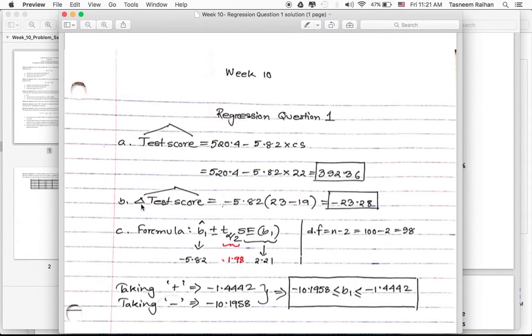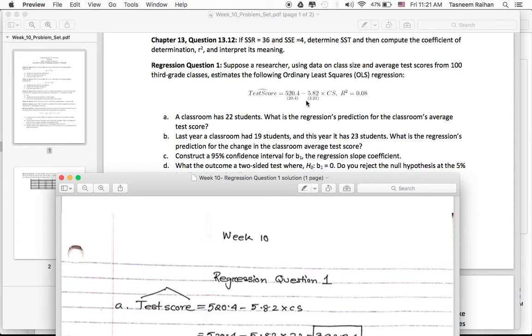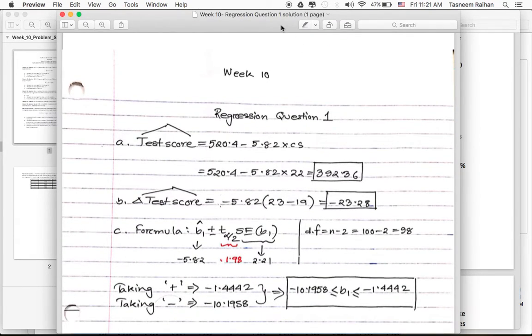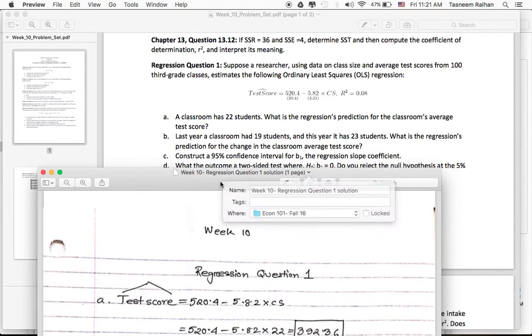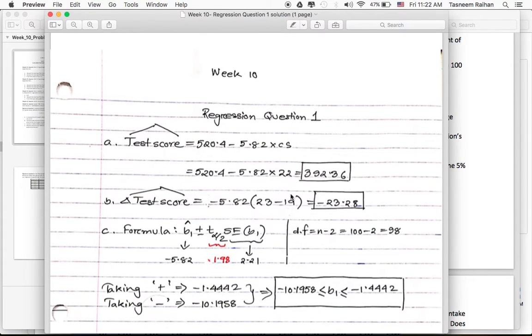The change in test score equals negative 5.82, which is just the slope coefficient here, times the class size this year, 23, minus the previous year's class size, which is 19. Intuitively it makes sense because the class size increased by 4 students. So you multiply the slope coefficient by that 4, which gives you the change in test score: negative 23.28. If the class size increases from 19 to 23 students, then you expect the test score to fall by 23.28 points.